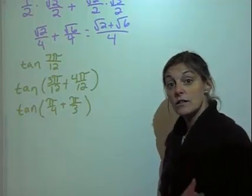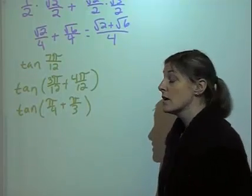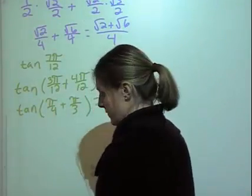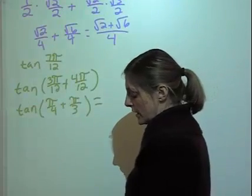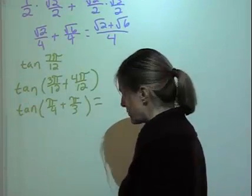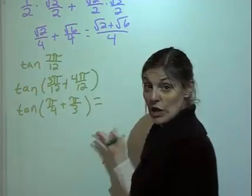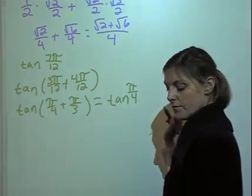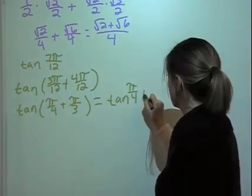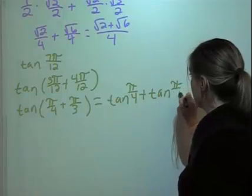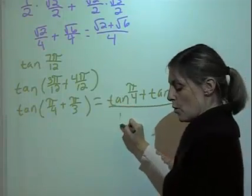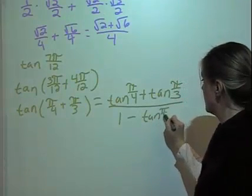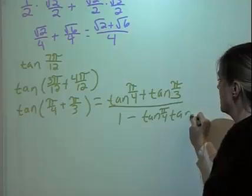We want to use our sum for tangents identity. Since it's plus, we're going to say tangent of π/4 plus tangent of π/3, over 1 minus tangent of π/4 times tangent of π/3.